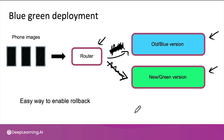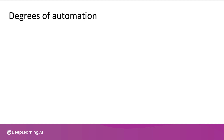In a typical blue-green deployment, people think of switching traffic 100% all at once, but you can also use a more gradual version where you slowly send traffic over. Whether you use shadow mode, canary, blue-green, or another deployment pattern, quite a lot of software is needed to execute this. MLOps tools can help with implementing these deployment patterns, or you can implement it yourself. One of the most useful frameworks for thinking about deployment is to think of it not as a zero-or-one — either deployed or not — but instead to design a system around the appropriate degree of automation.